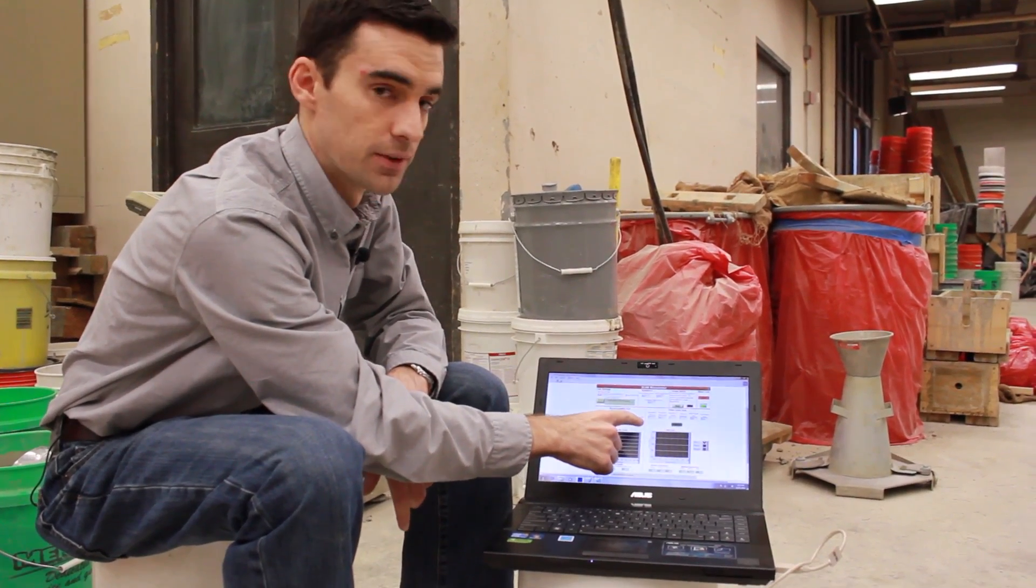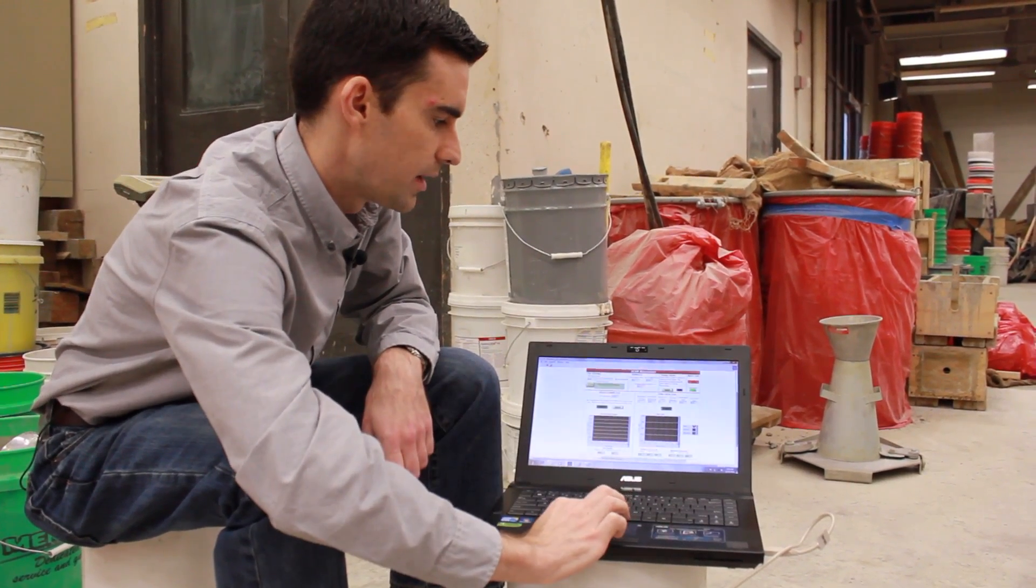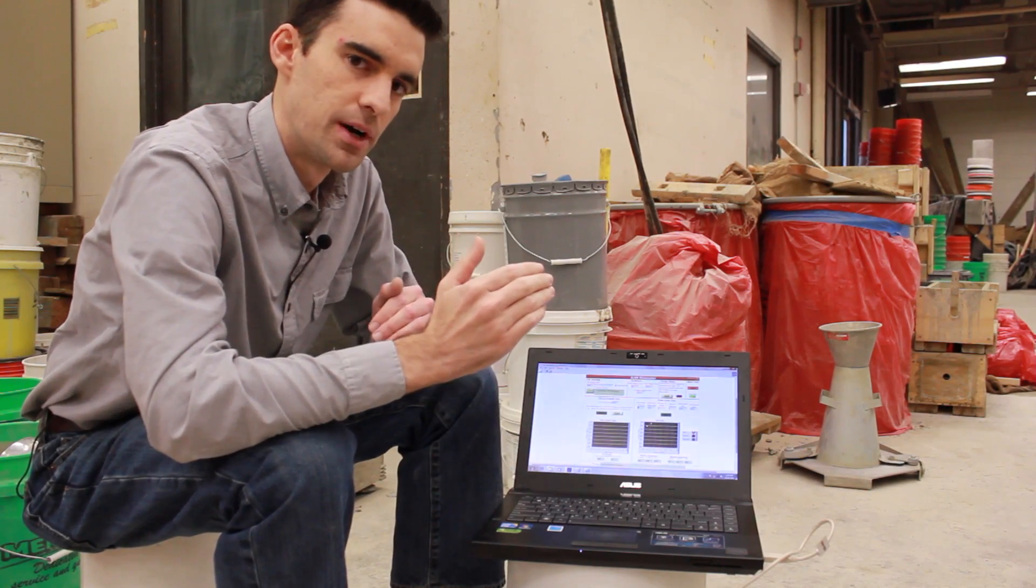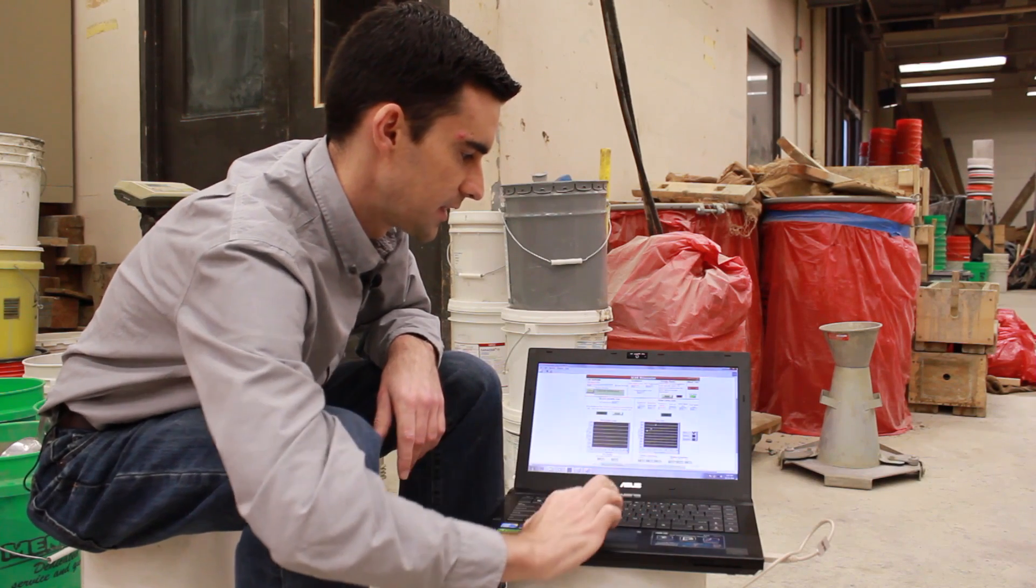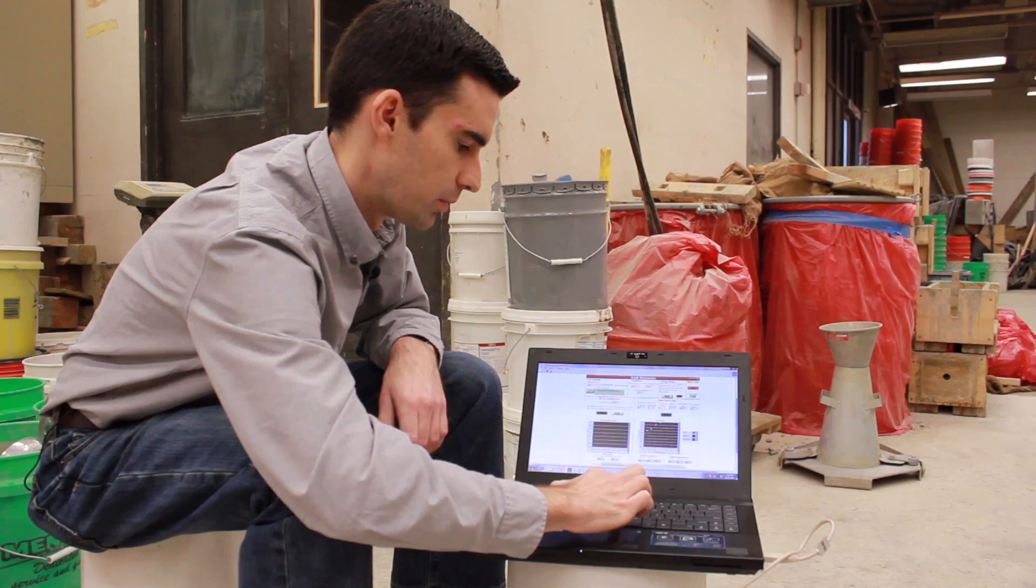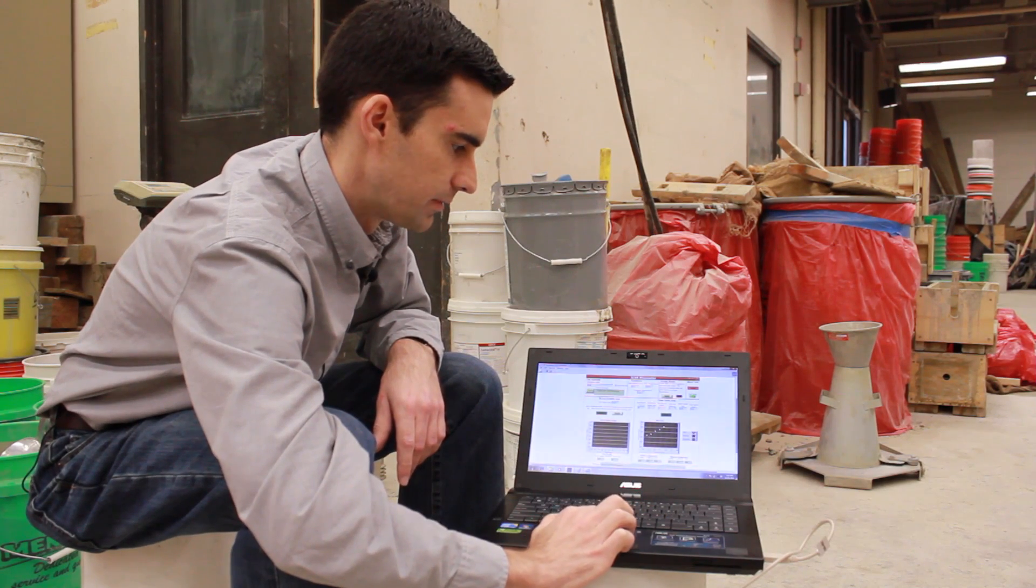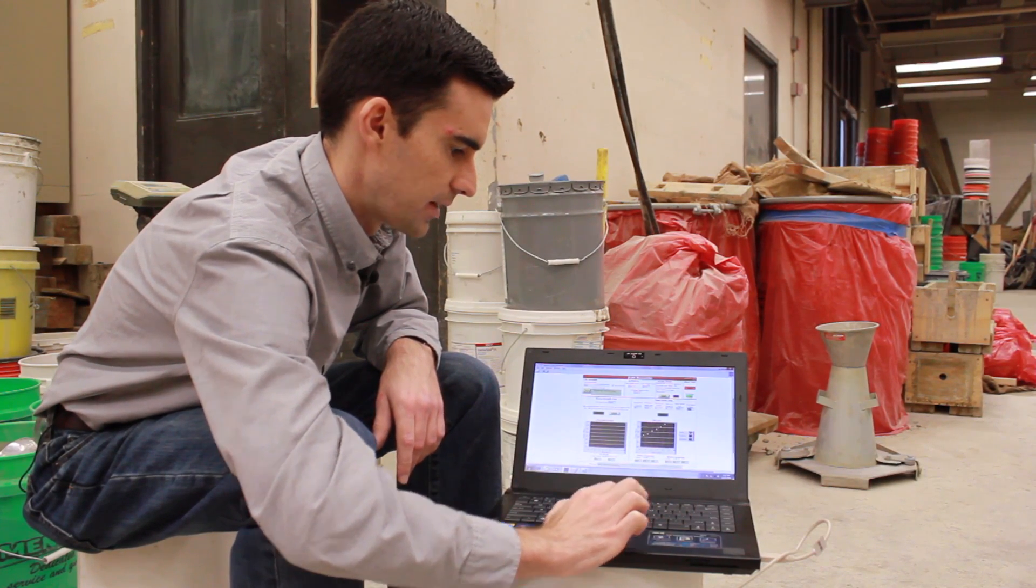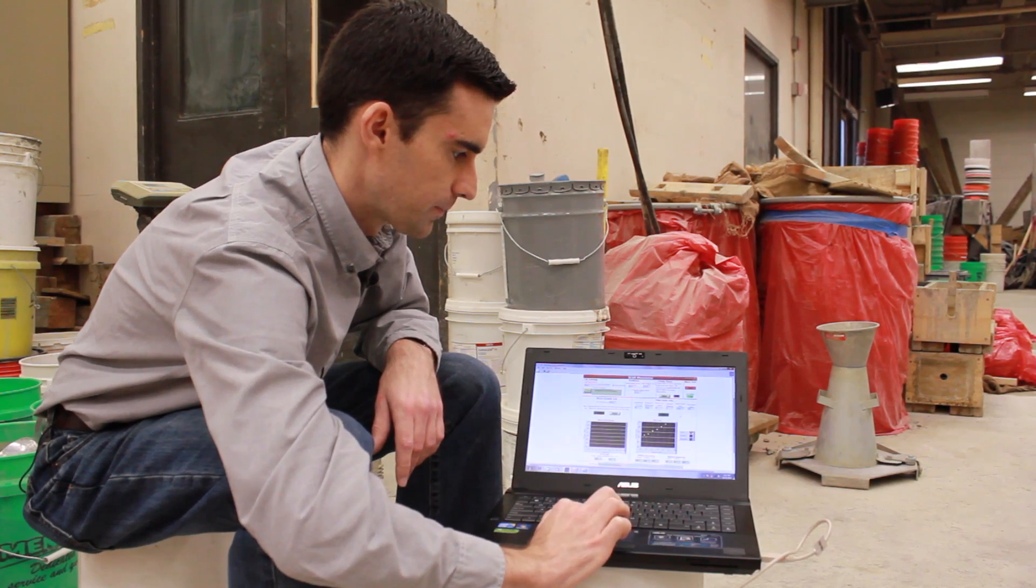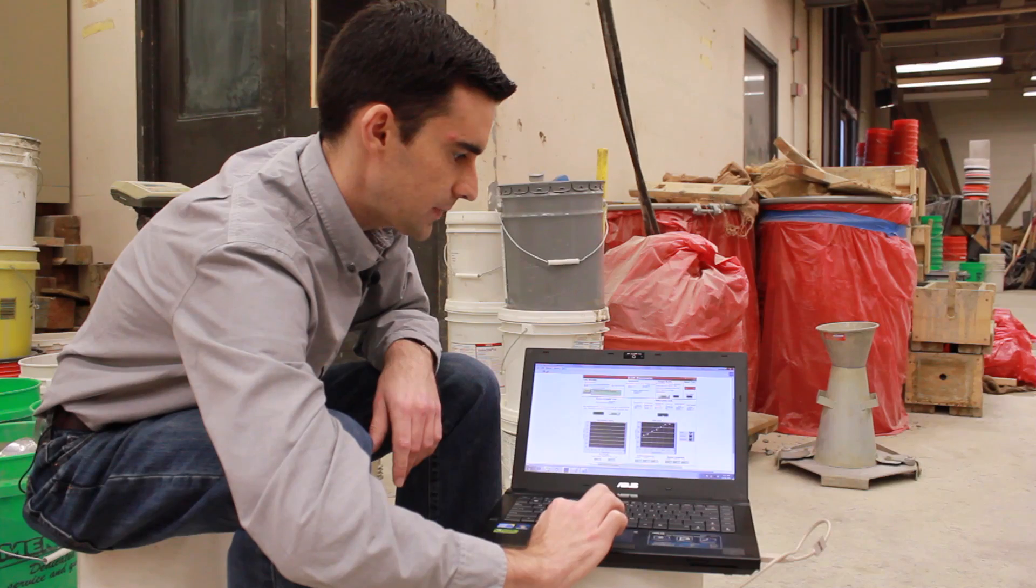While the test is in progress, we can go ahead and start to program in our second flow curve test parameters. Here, we want to set the initial breakdown time to be high, because we want to have a long breakdown period at high speed to eliminate any effects of the thixotropy. In this case, we'll do a full 60 seconds at our maximum speed that we'll run for this particular test, 0.5 revs per second. We'll set the initial speed to 0.5, the final speed to 0.05. We'll then press start and let the test run again.